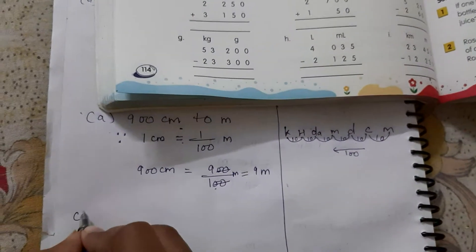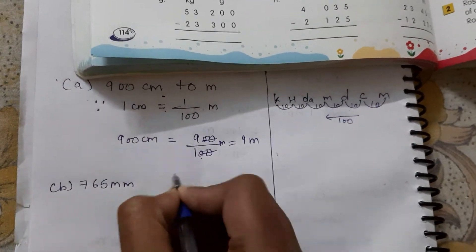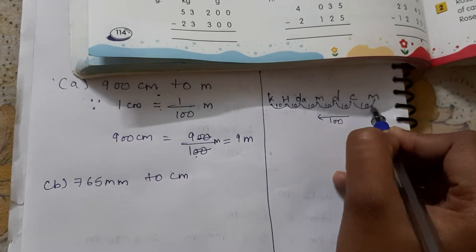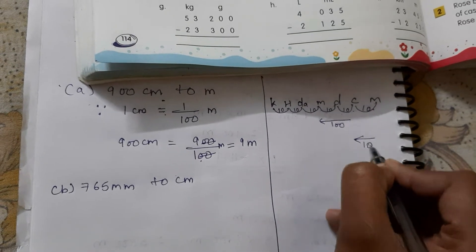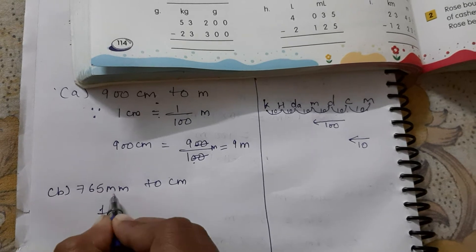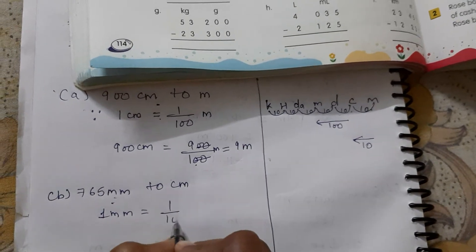765 millimeter to centimeter. We have to change millimeter to centimeter. It means how many times? 1 times 10. So what will be the formula? From here, 1 millimeter equal to 1 upon 10 centimeter.